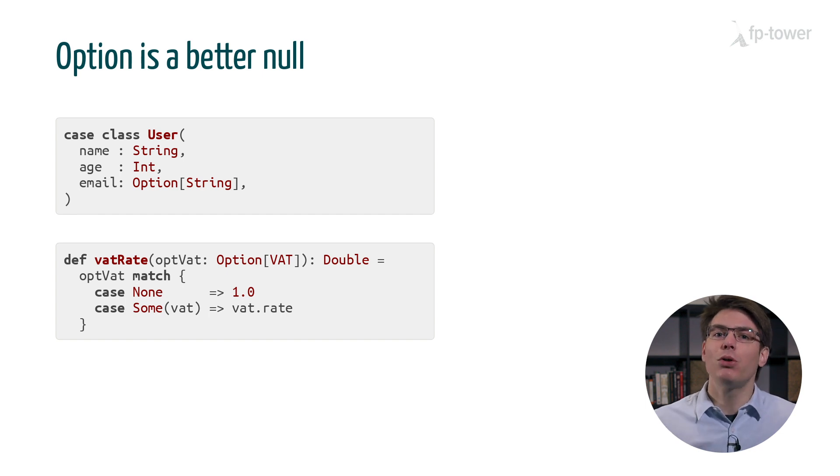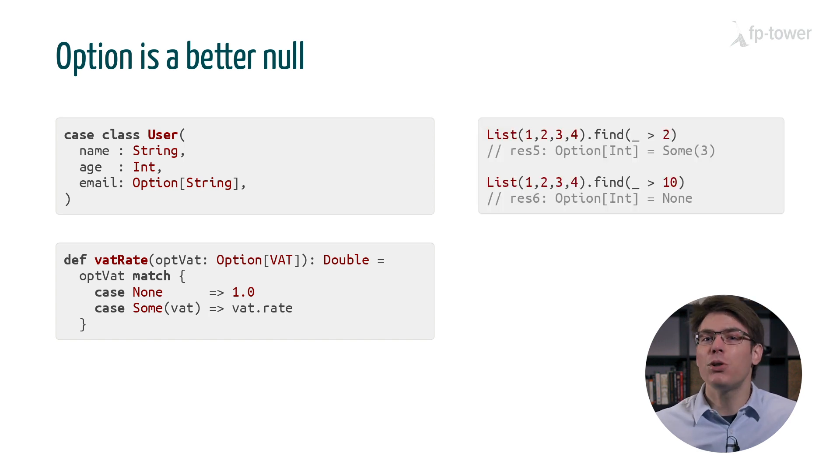Another benefit of Option is that it forces us to consider the scenario when the data is missing. For example, suppose we want to calculate the VAT rate but only have an Option of VAT. In that case, we will need to pattern match on the Option to access the VAT object inside it, but in doing so we are forced to consider the case where the Option is None.